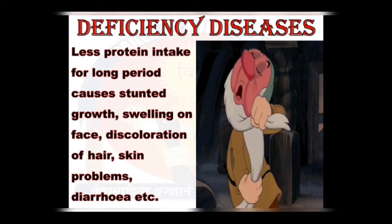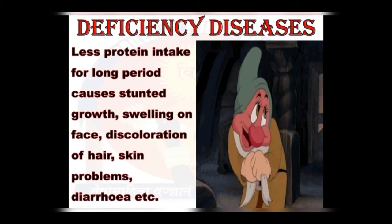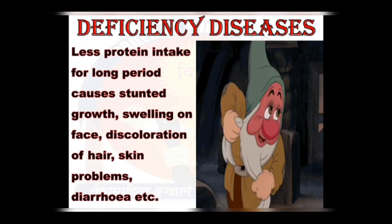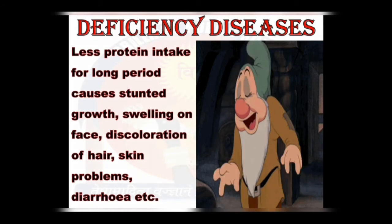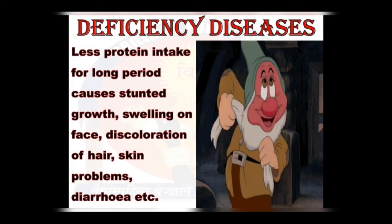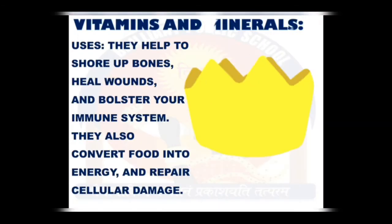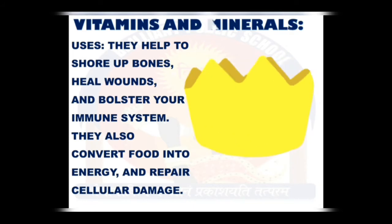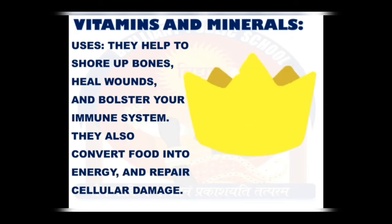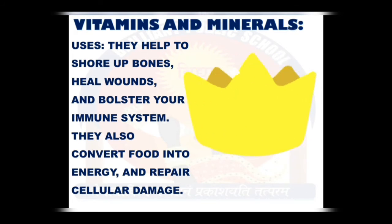When we take a diet low in protein, cell build-up and repair are both greatly reduced, producing these types of problems. Now, vitamins and minerals — although vitamins help shore up our bones, heal wounds, and bolster our immune system, they also convert food into energy and repair cellular damage. If not taken in proper amounts, deficiency of different vitamins and minerals may result in certain diseases and disorders.